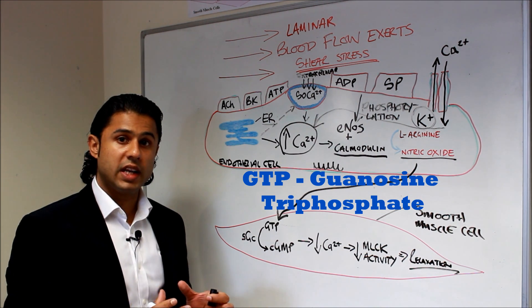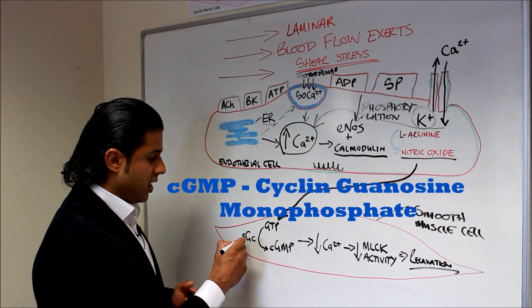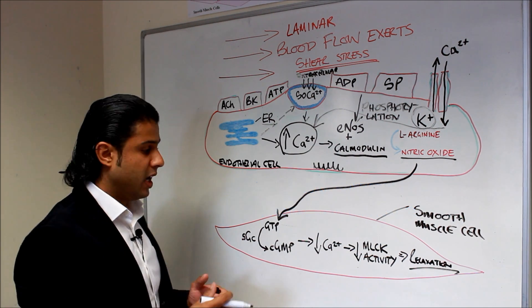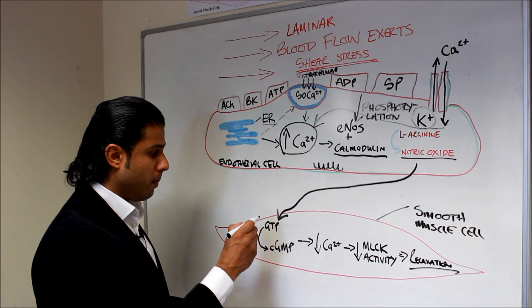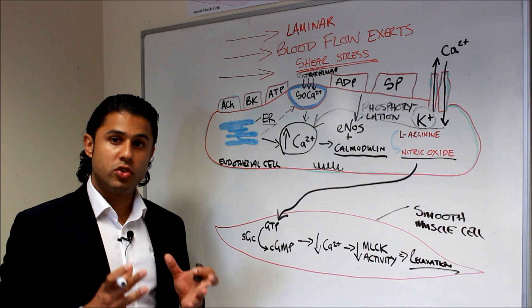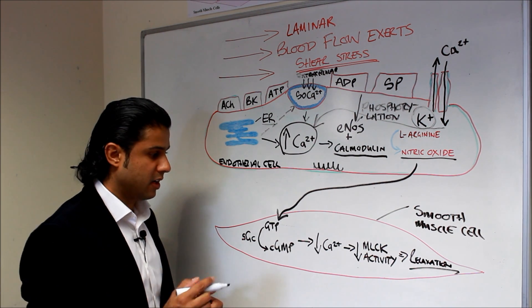So that's soluble guanylyl cyclase increasing the rate of reaction from guanylyl triphosphate into cyclic guanylyl monophosphate, which is a second messenger.